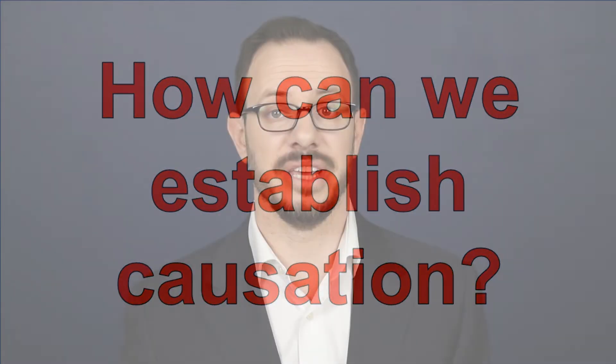You can establish causation with a controlled experiment. Properly designed experiments are the best way to establish causation — full stop. Unfortunately, it's not always possible or practical. If you can't set up a controlled experiment, that doesn't mean there isn't anything you can do. There are other ways of establishing causality using analysis of existing data.